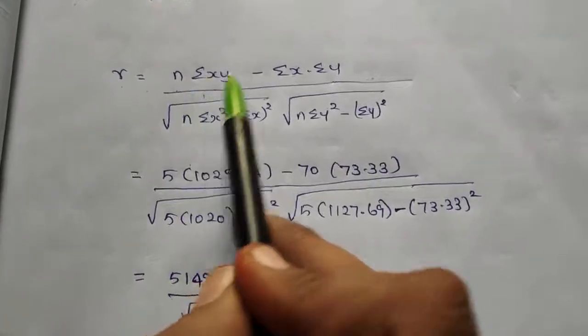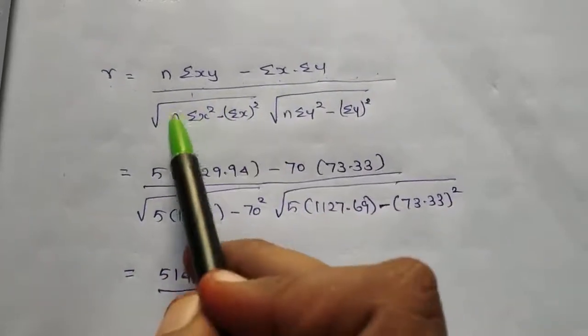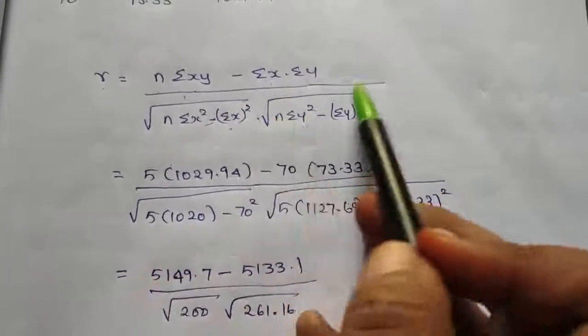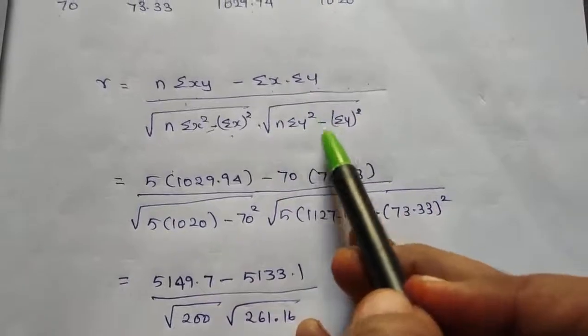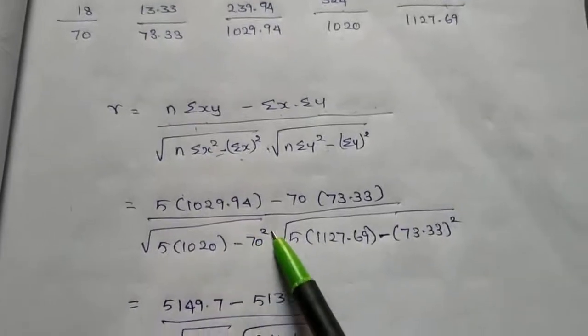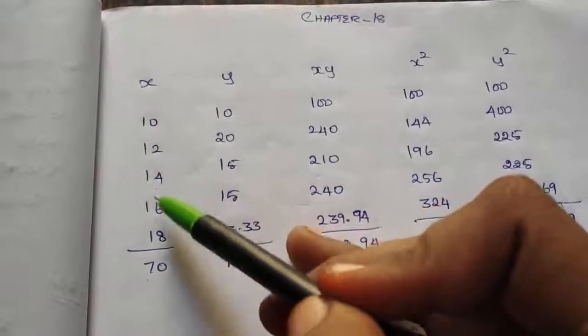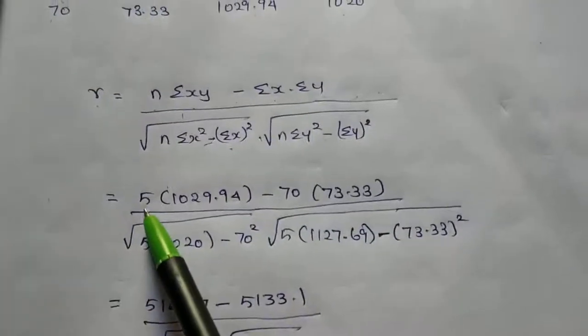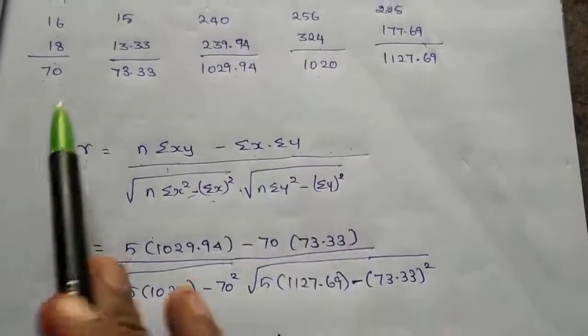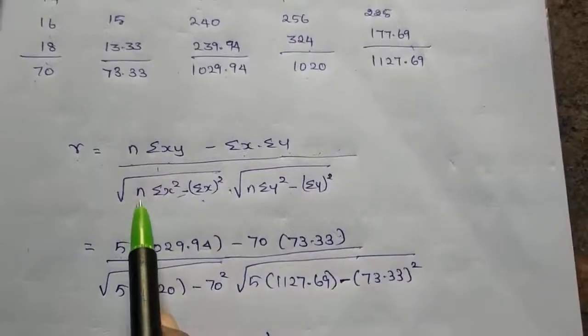Y value, summation Y square, and summation Y square. Now we have to substitute. Five columns, so N value is 5. Summation XY value minus summation X times summation Y, this value is substituted, divided by root of N value 5.